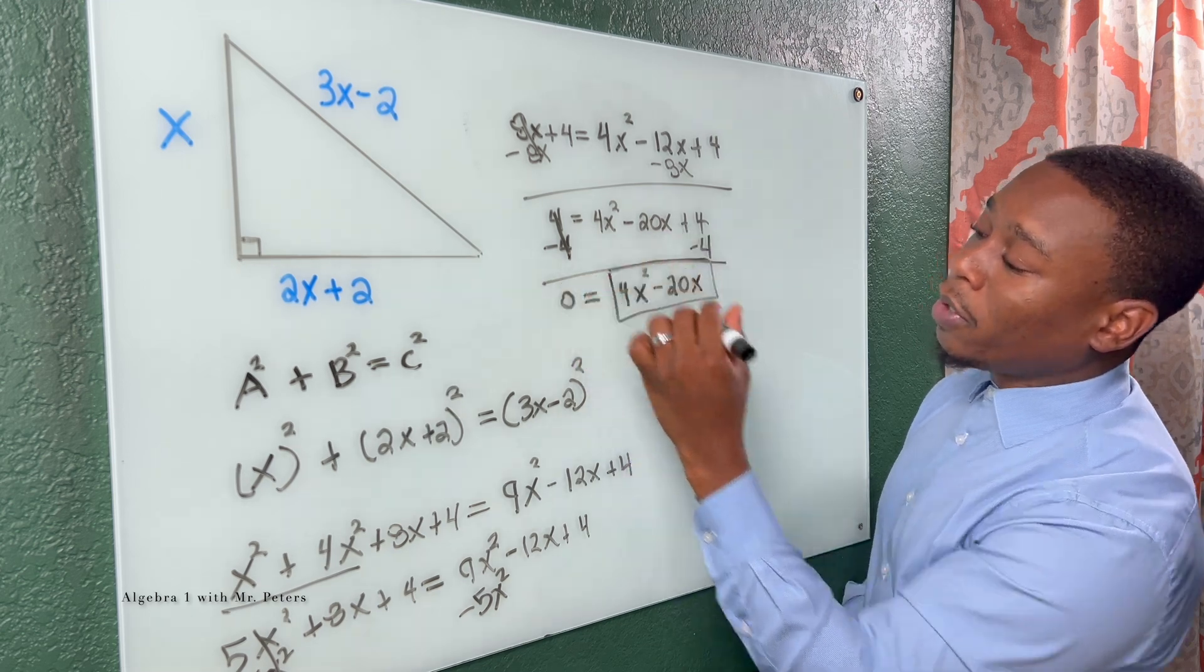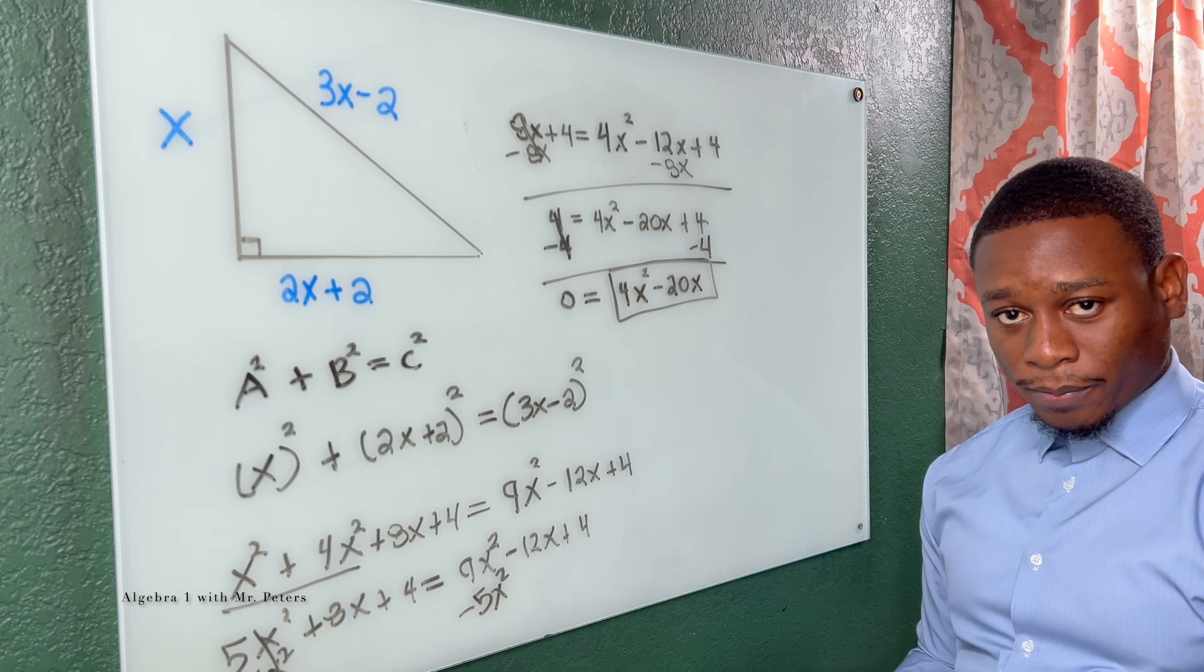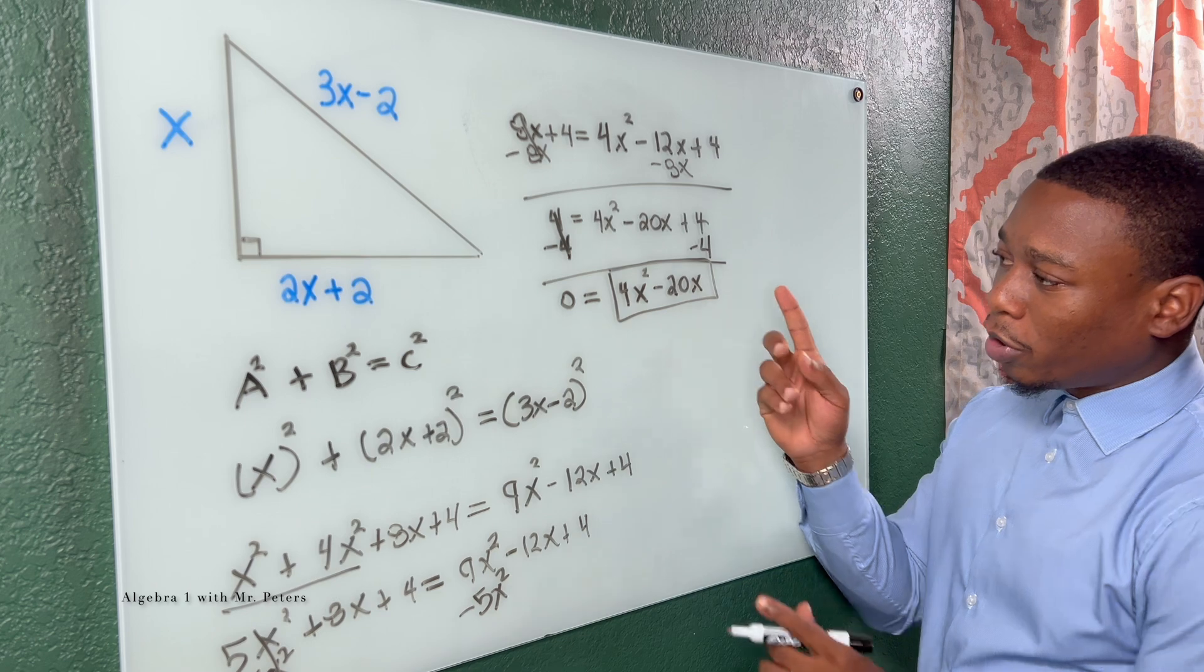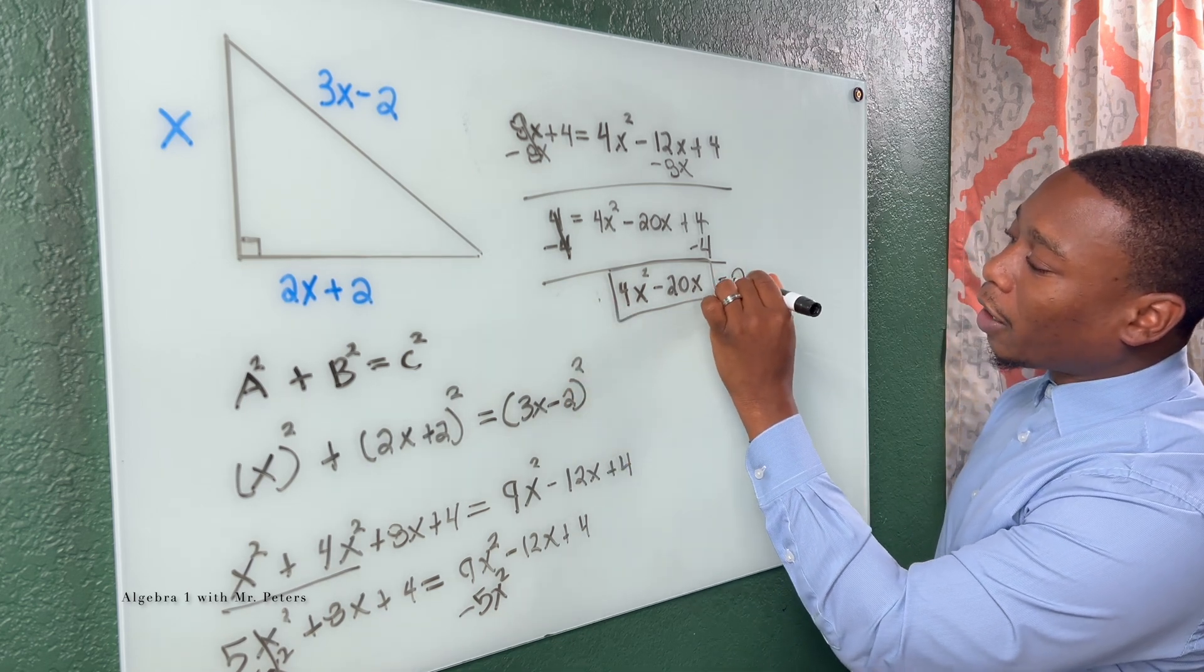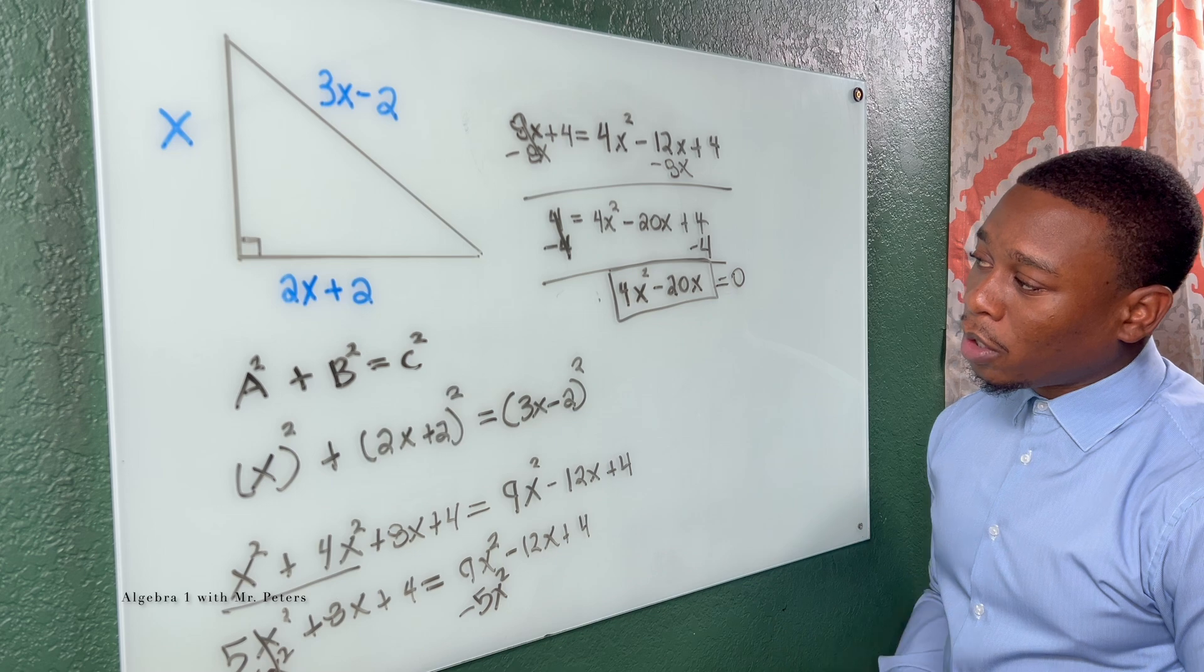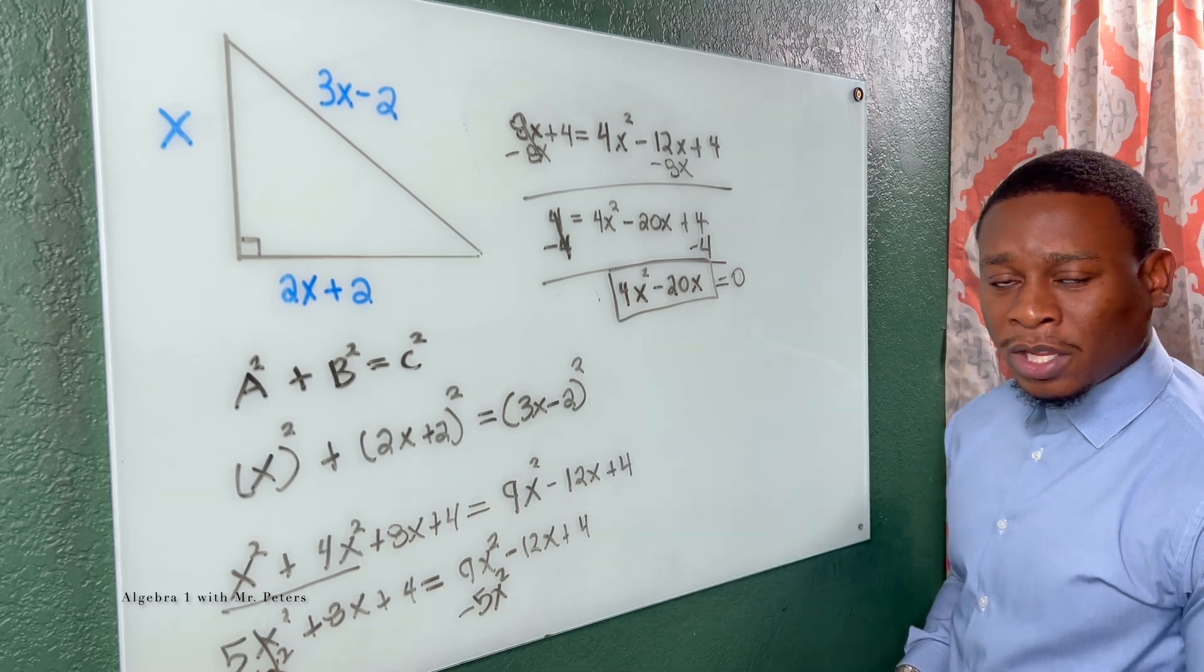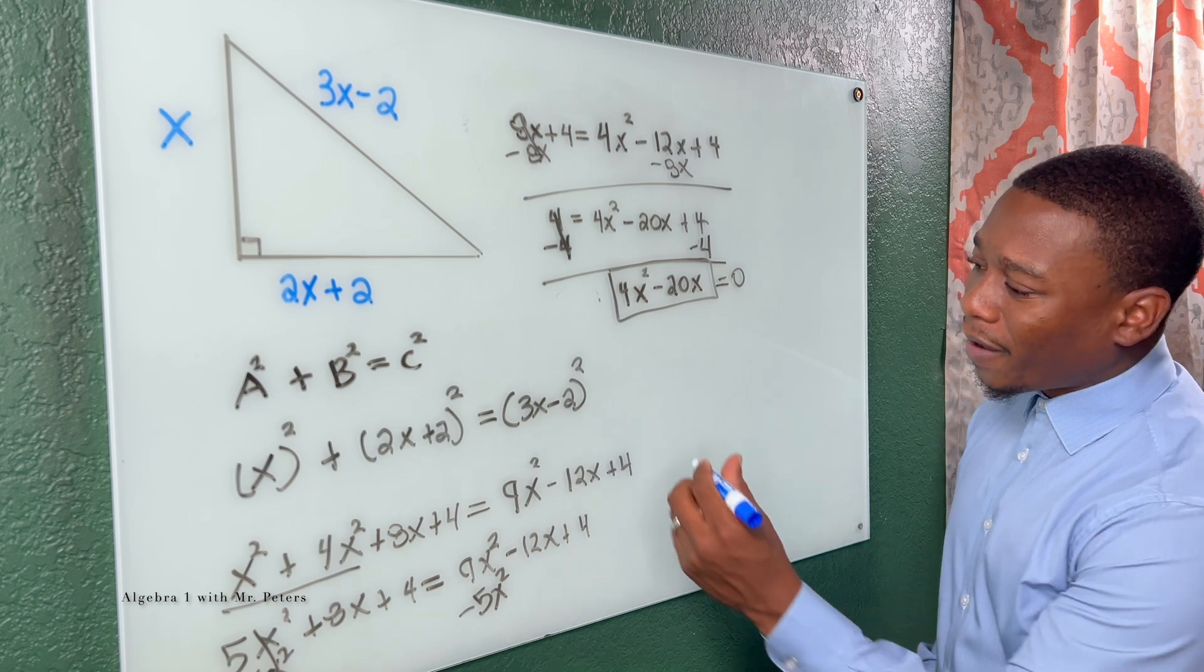So now we have 0 is equal to 4X squared minus 20X. Now at this step, this is when we want to factor. So what I'm going to do is kind of rearrange this equation and put is equal to 0 at the end because I like my equation set up like that. So now let's switch colors. We're factoring this.